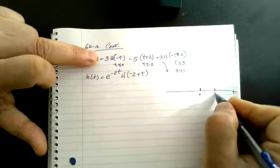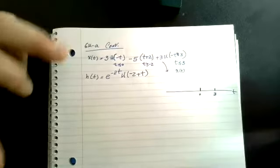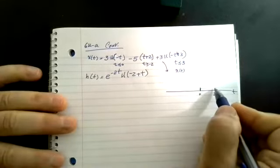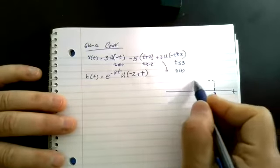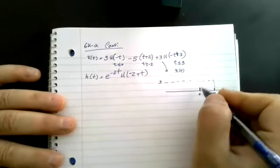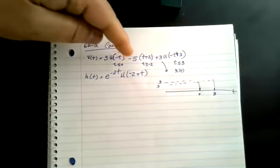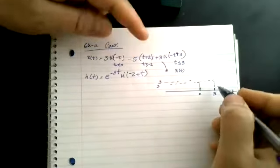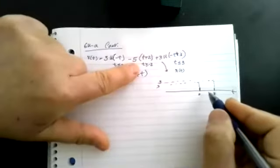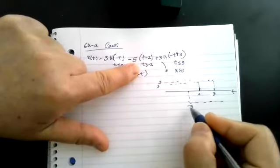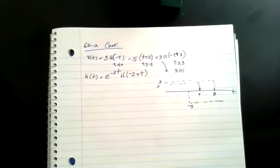The other term also has a contribution of three, which happens from three back. There are too many threes in this problem. So from here going back the magnitude is three, and from here going back again the magnitude is three. Three plus three is six. Then the minus five term says there's a magnitude of minus five starting at minus two.